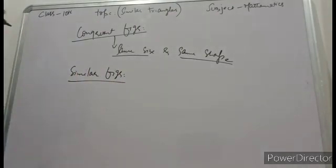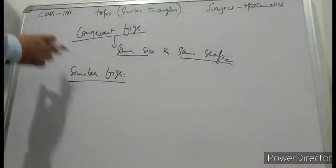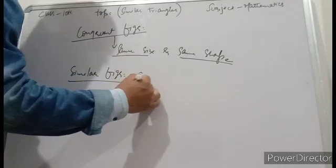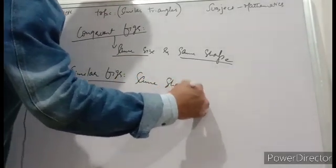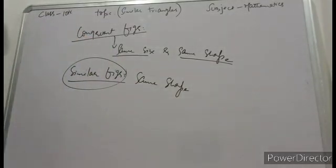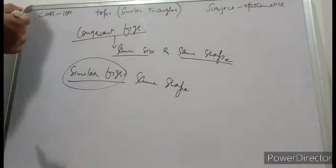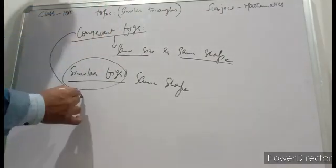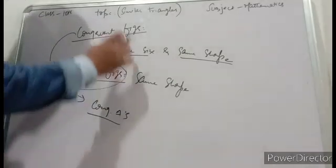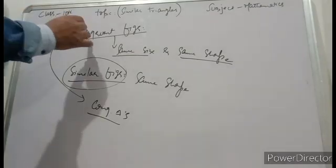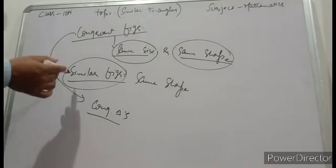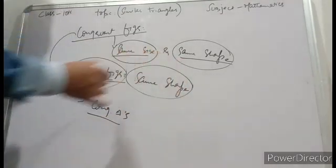Similar figures, similar triangles. Two figures are said to be similar if they have the same shape. Here we will study congruent triangles. Two figures are said to be congruent if they have the same size and shape. Two figures are said to be similar if they have the same shape.